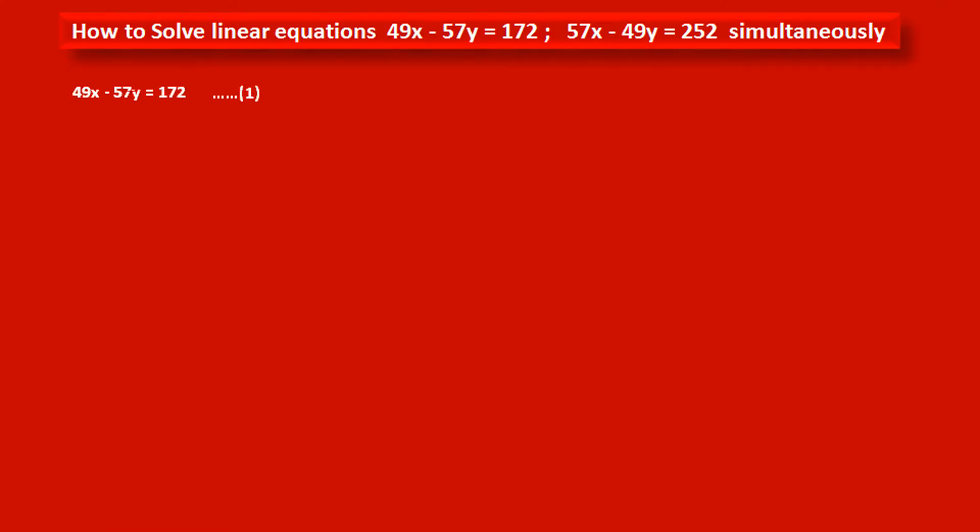Now see: 49x - 57y = 172. This is the given first equation. And 57x - 49y = 252. This is equation number 2. These two equations are given.